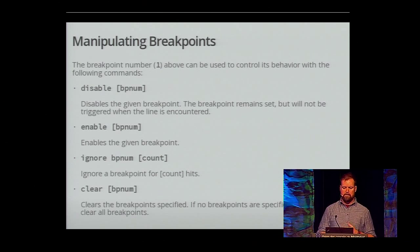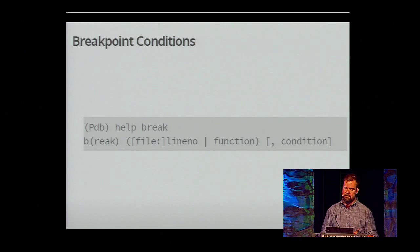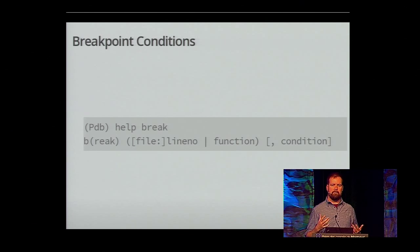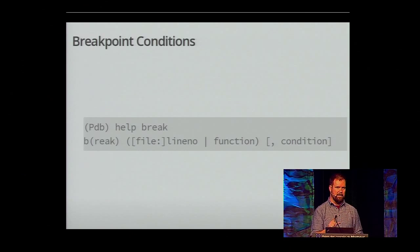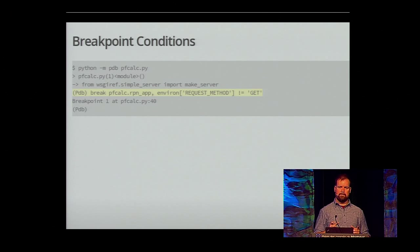There are a few additional commands around breakpoints to enable and disable them. What about that condition clause when it comes to setting breakpoints? There are times when, if you're debugging a web application, you might want to only break when a problem occurs on POST requests, but you don't want to break at every request because there are a whole lot of GETs before you're actually able to get the POST.